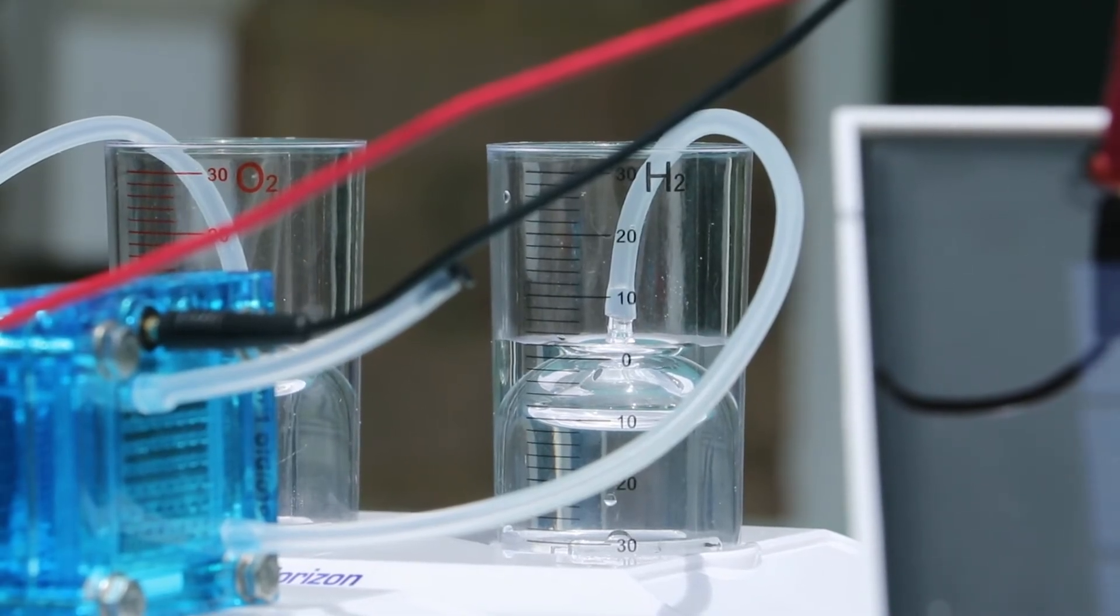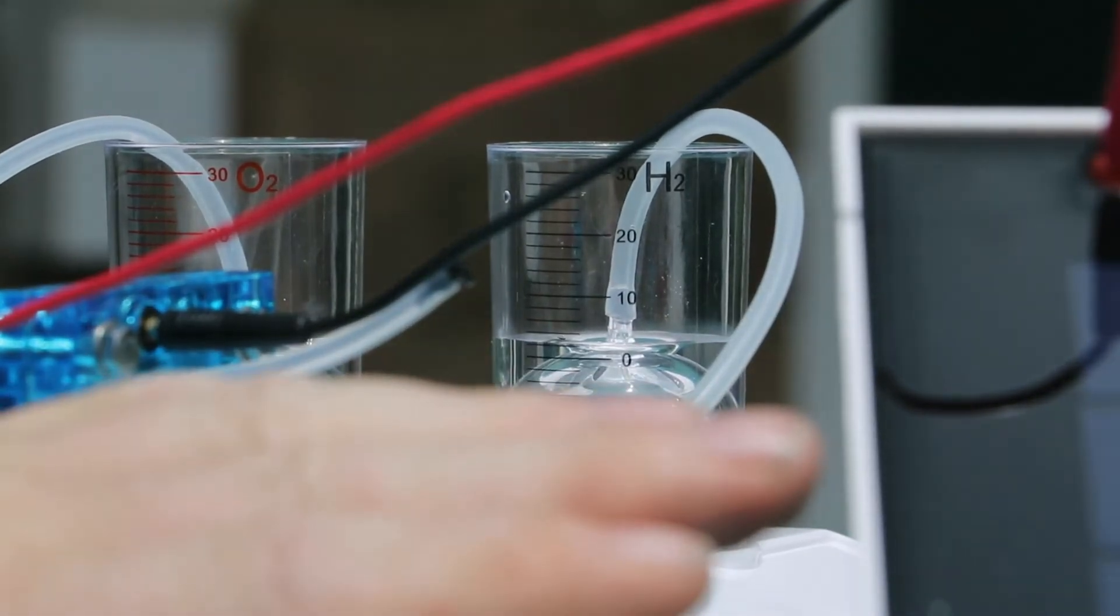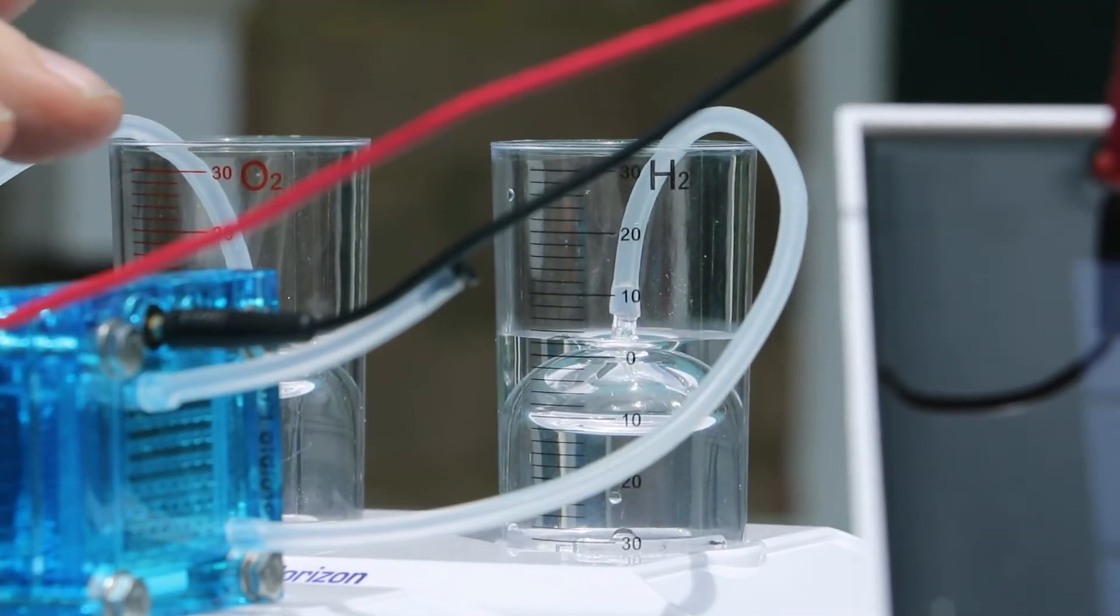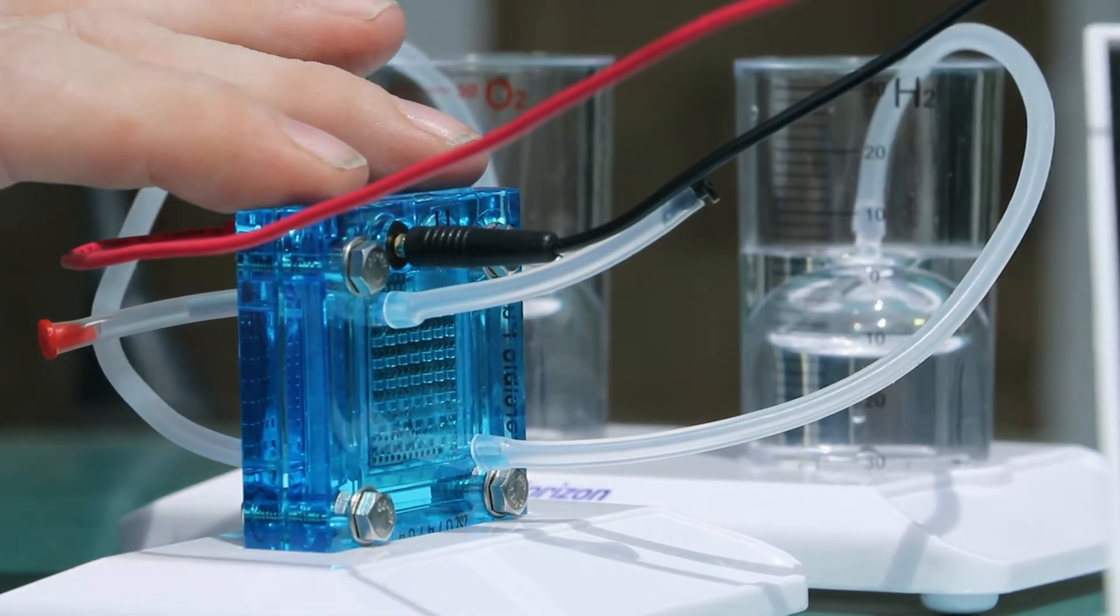We need a nice sunny day, the sun shining. Electricity falls on the solar panel, goes into the solar cell, this fuel cell, and this fuel cell is splitting up water into hydrogen and oxygen.